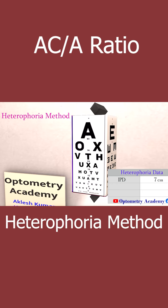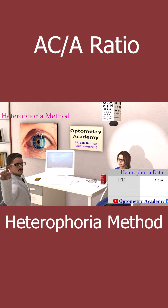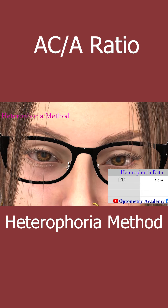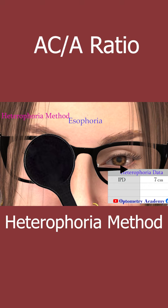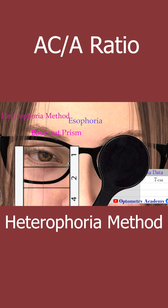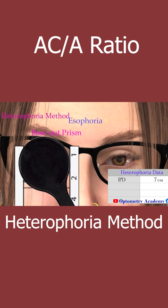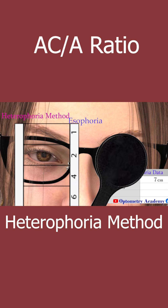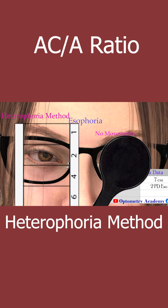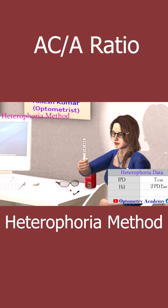Ask the patient to look at a six-meter far-away target and measure the patient's distance phoria. Here the distance phoria is 2 prism diopters esophoria. Then hold a near target at 40 centimeters — this is our near fixation distance (NFD), which is 40 centimeters or 0.4 meters.